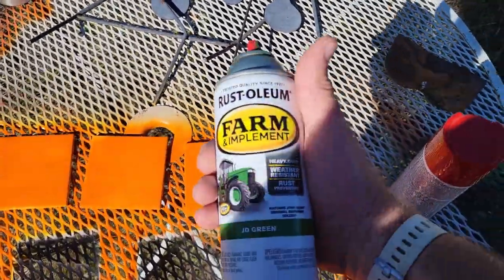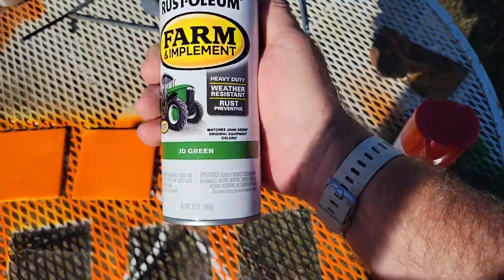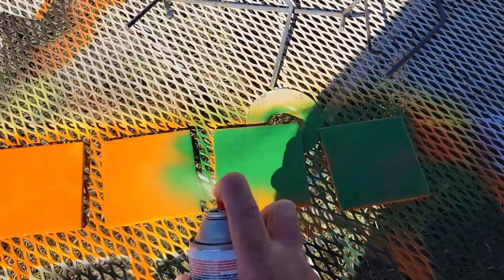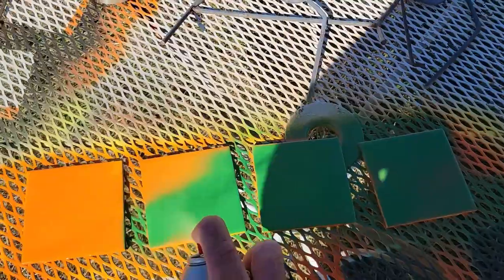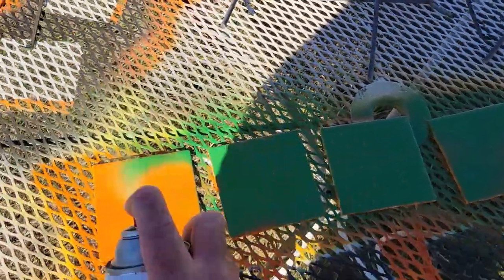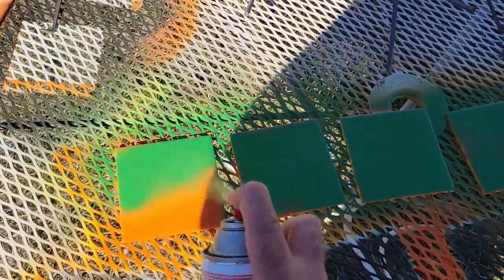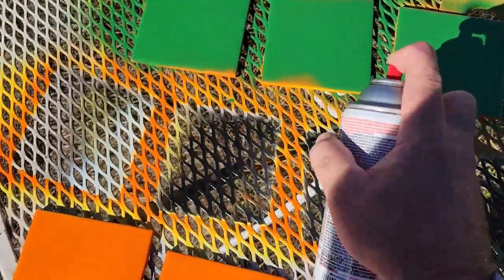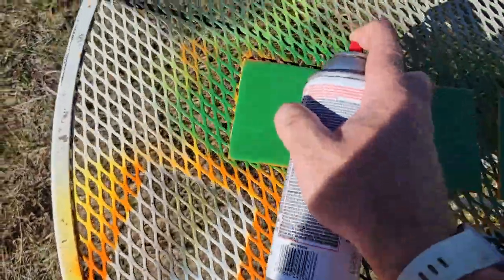For the green, I am using Rust-Oleum John Deere green. And once again, it doesn't have to be a real heavy coat. We just want to make sure they're all greened up. And we got a little spot down there we missed. Maybe a little more up here. All right, and our green is looking pretty good. I think we're good on green.